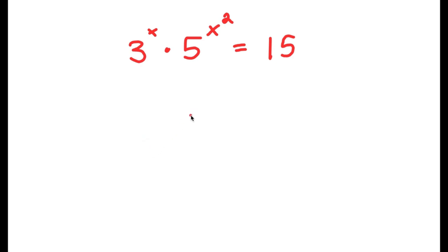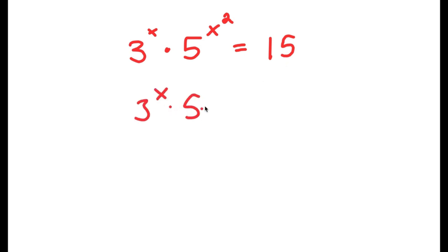In this problem, I have 3 to the power of x times 5 to the power of x squared is equal to 15. To solve this, I'm going to first start by rewriting 15 as 3 times 5. So now I have 3 to the power of x times 5 to the power of x squared is equal to 3 times 5.